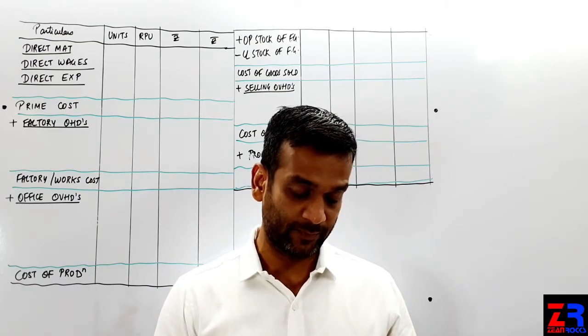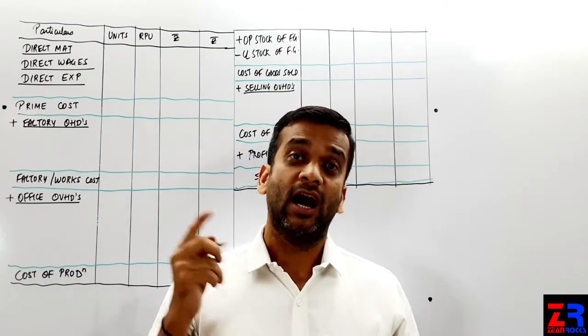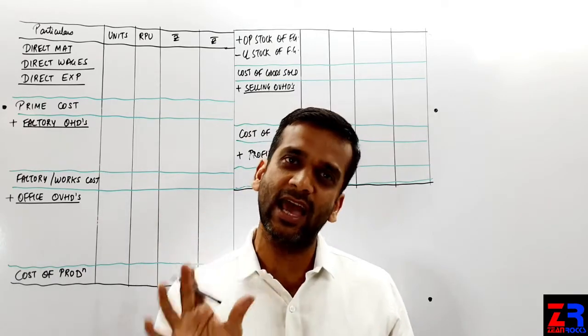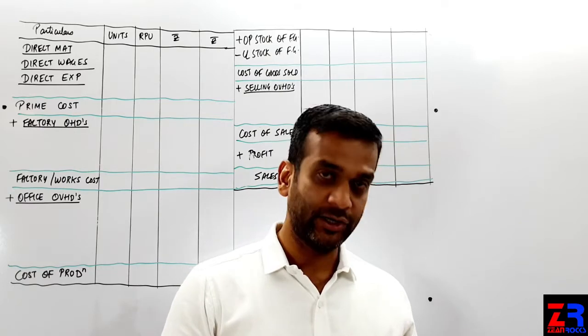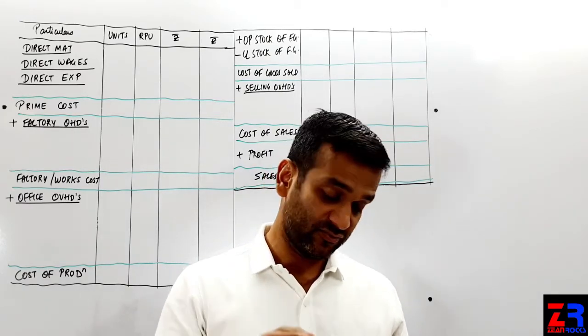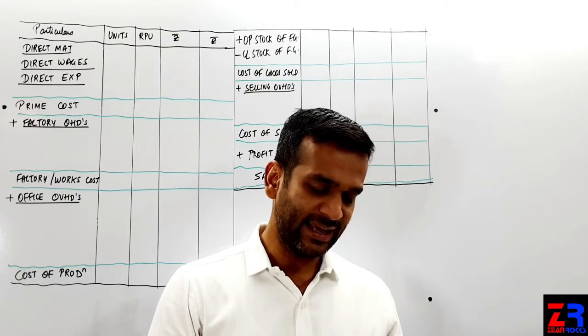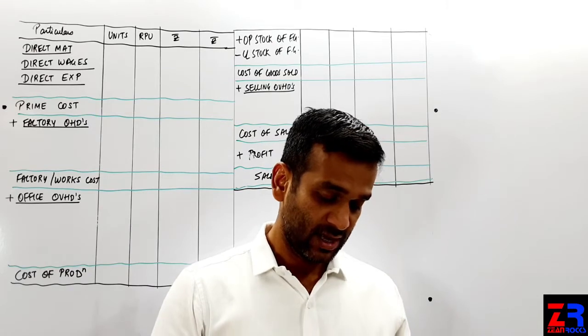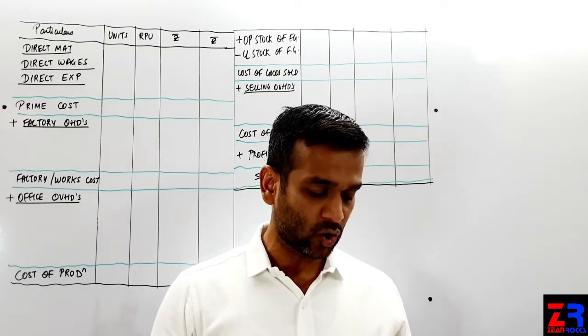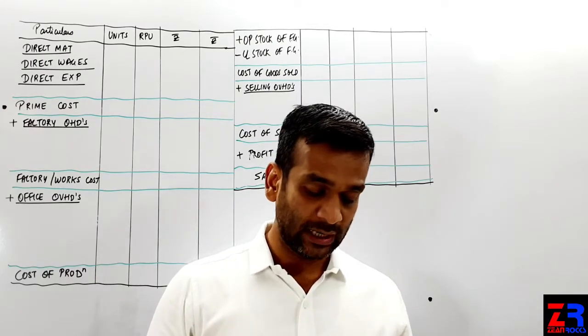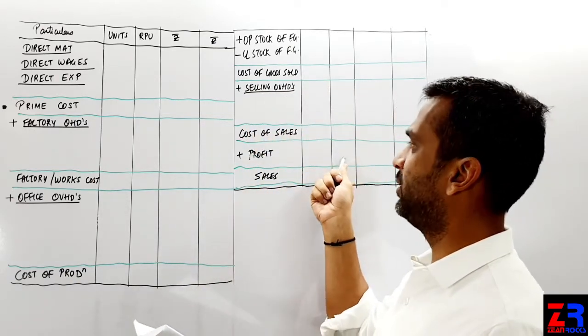Depreciation on computers is office overhead. Purchase of machinery chokdi, asset khareedna chokdi. Asset ka maintenance, repairs, depreciation aya kharcha aya, but asset khareedne ka value nahi aya. Depreciation on delivery van is selling overhead. Office maintenance is office overhead. Factory overheads. Goodwill written off chokdi, intangible asset write-off ka cost sheet se relation kuch nahi. You are required to prepare a cost sheet showing various elements of cost both in total and per unit and also find out total profit and per unit profit.